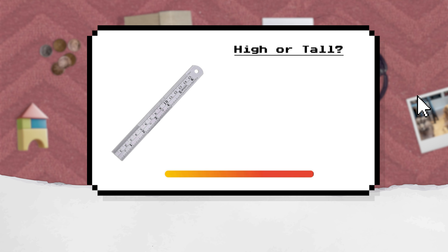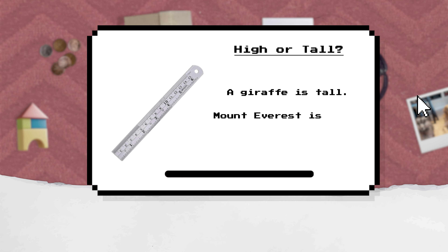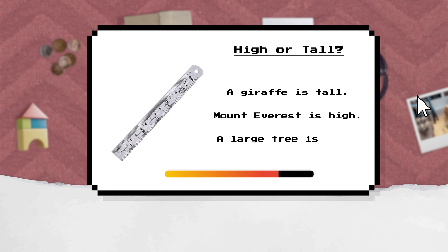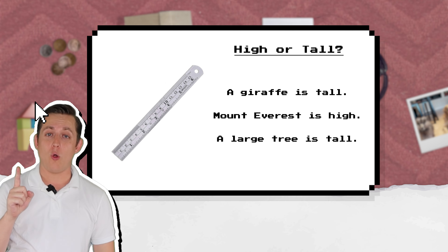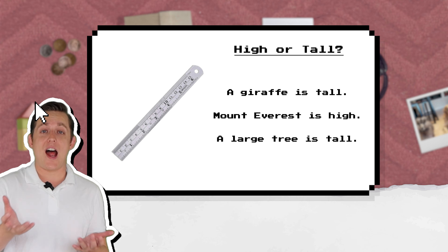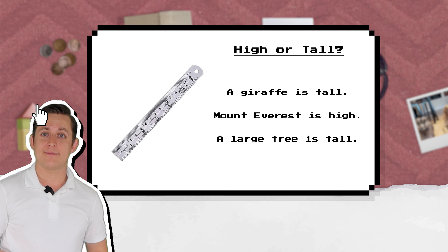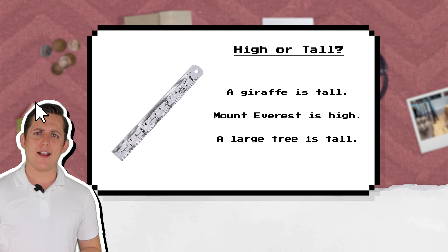High or tall? A giraffe is tall. Mount Everest is high. A large tree is tall. We use tall for big, thin things, like a large tree or a giraffe. We use high for mountains and things that are far above the ground, like Mount Everest or a cloud.